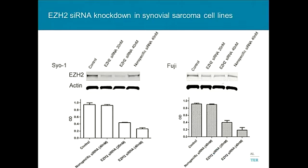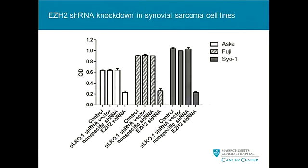To be thorough, we did some knockdown studies — siRNA showing nice inhibition, and all these cells for the most part die in vitro. Using a viral shRNA vector, we see this nicely replicated across three different cell lines as well.